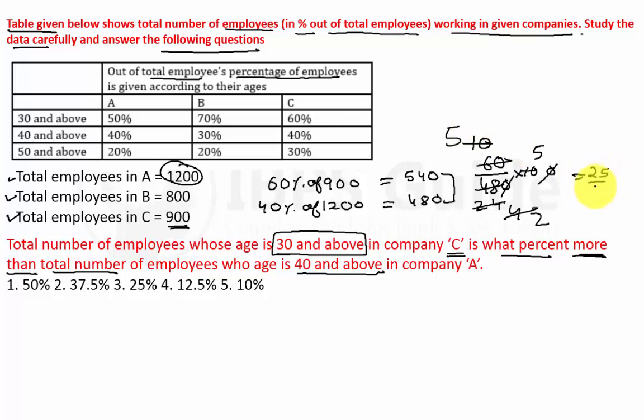So 60 divided by 480, multiplied by 100 gives 12.5 percent. So option number 4 will be the correct answer. Now, next question.